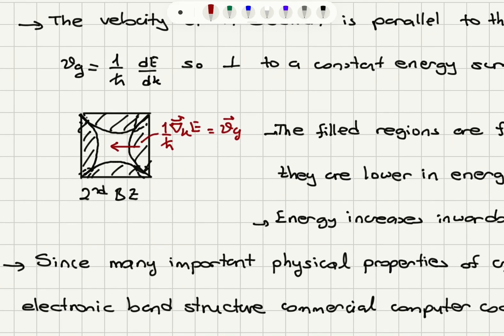So if you look at, for example, second Brillouin zone reduced to the first Brillouin zone here, you can see that the empty states are inside, the filled states are basically these semi-circular regions, and the electron will move perpendicular to the constant energy surface.